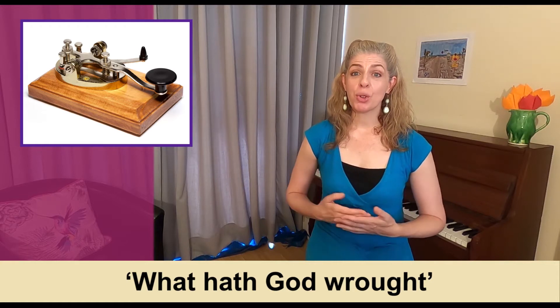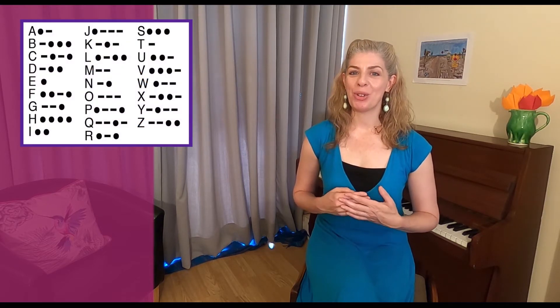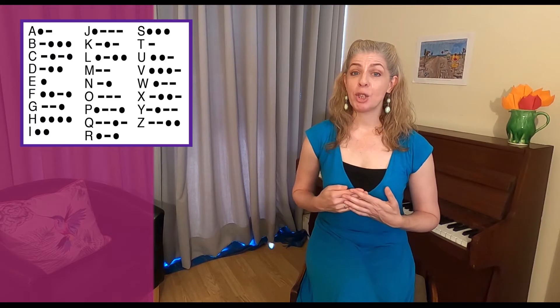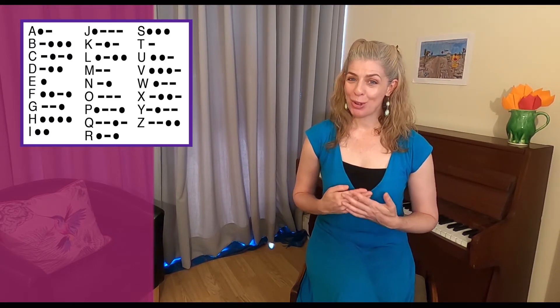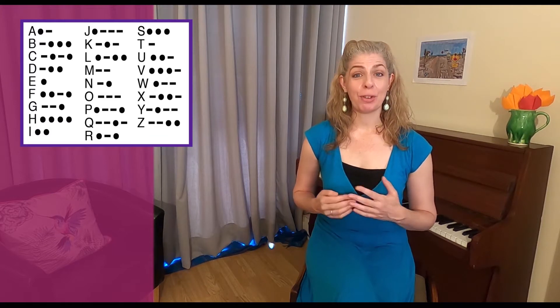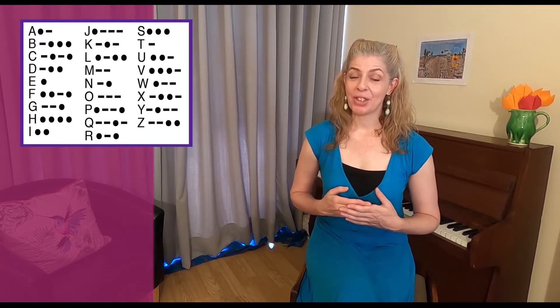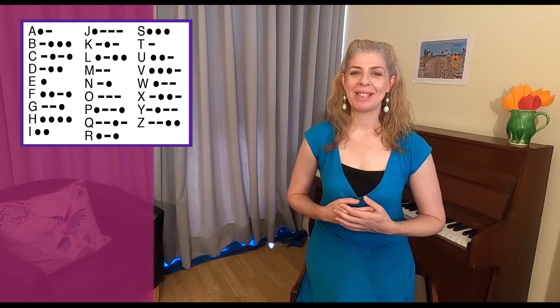Do you know what Morse code is made up of? Well, it's a system of dots and dashes which are tapped out on a telegraph key. They can also be flashed by lights or represented by sound. The most used letters in the alphabet only use a few symbols to represent them, and the least used letters have longer combinations of dots and dashes.